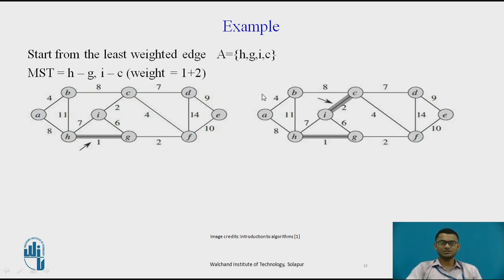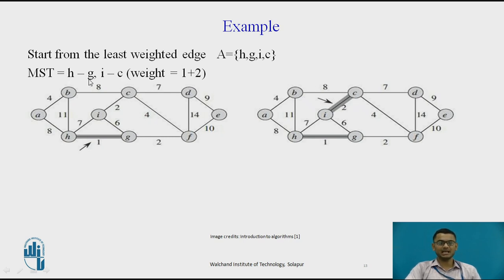The next edge to be added is of weight 2, which connects I and C in the MST. Now my MST has two edges — H–G and I–C — and its total weight is 1 plus 2.